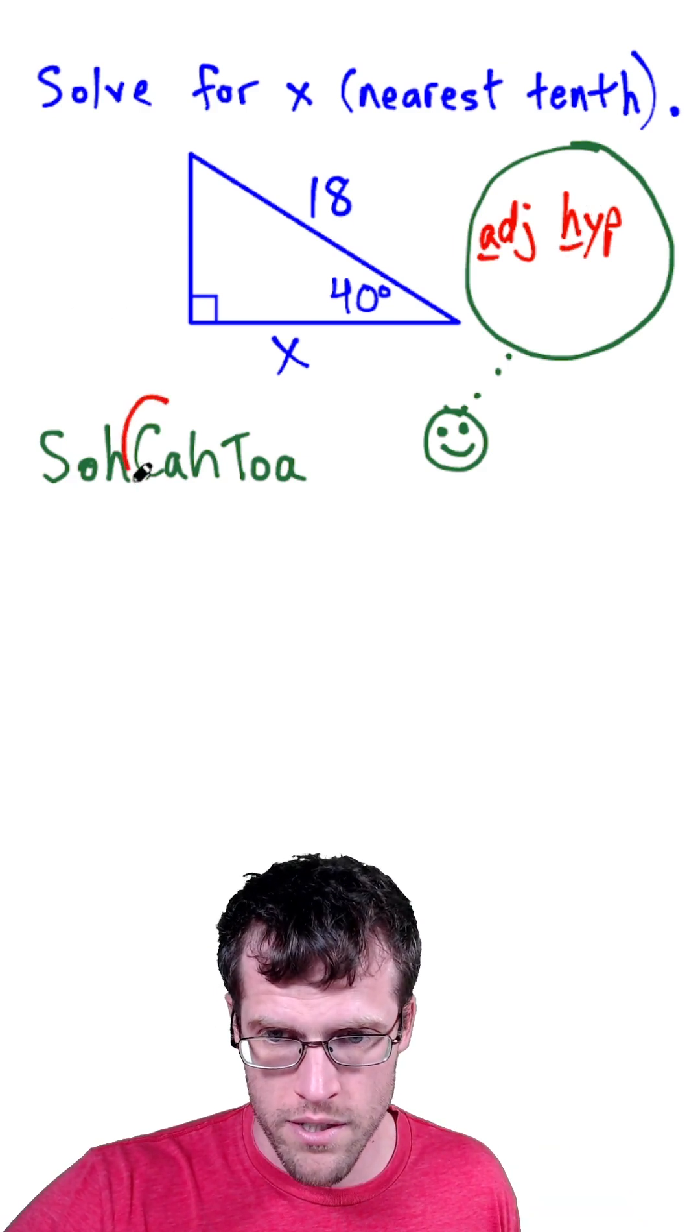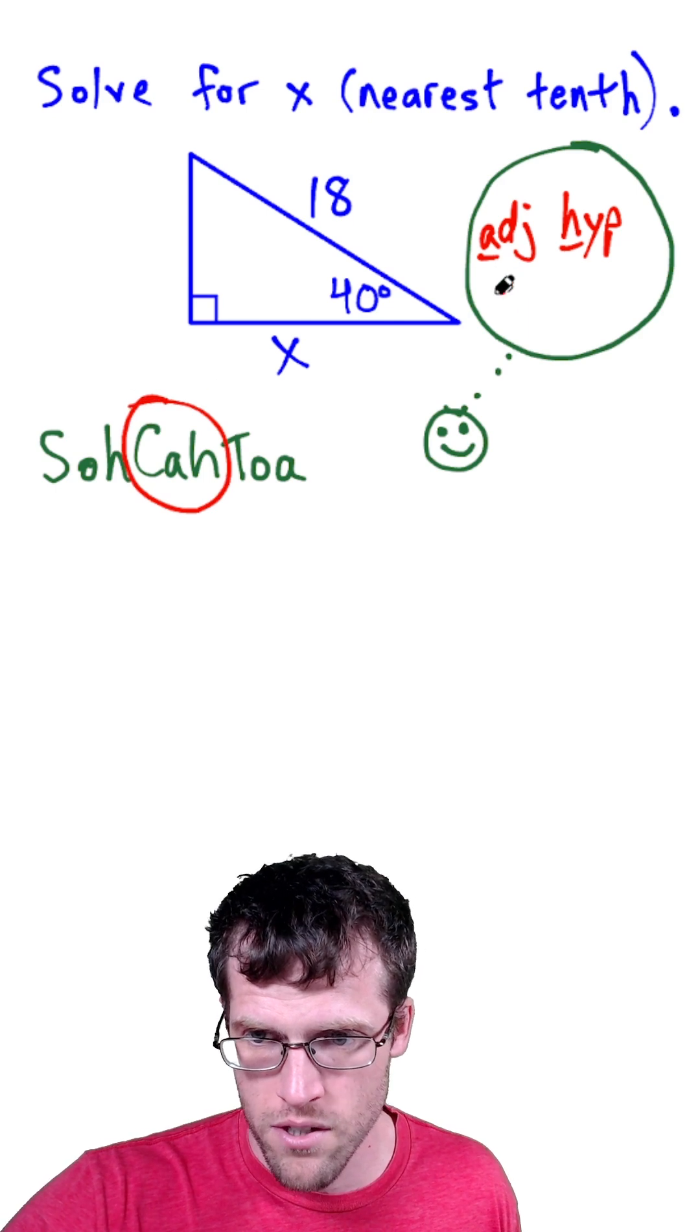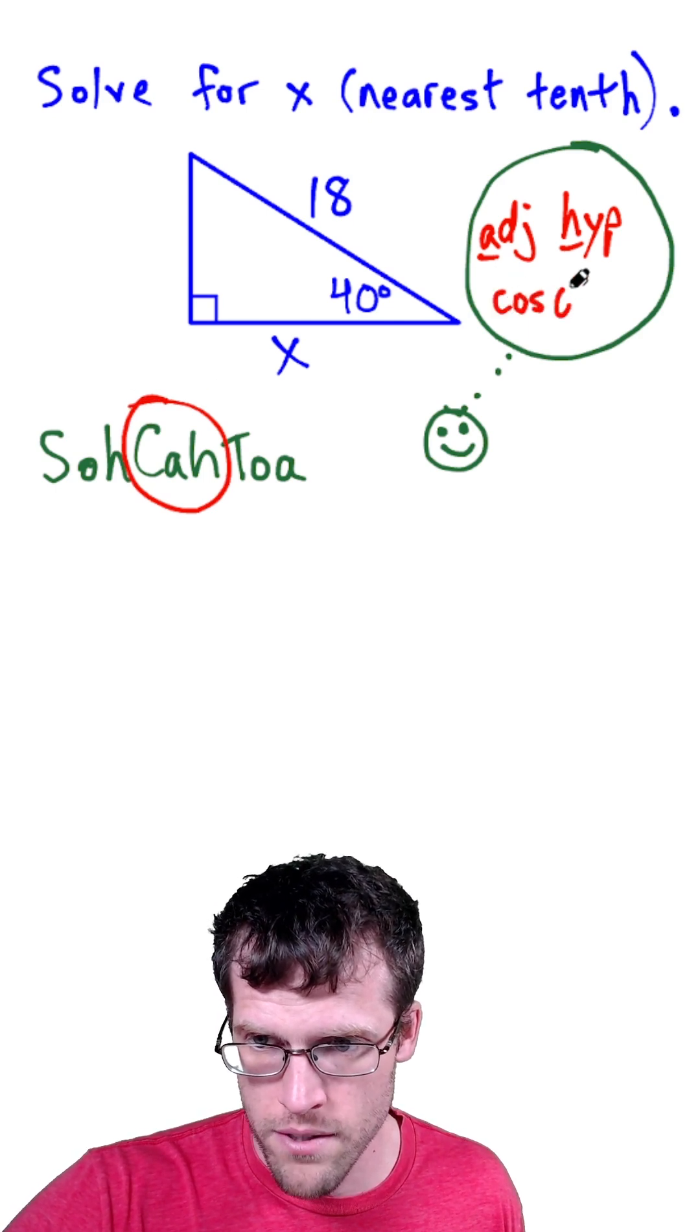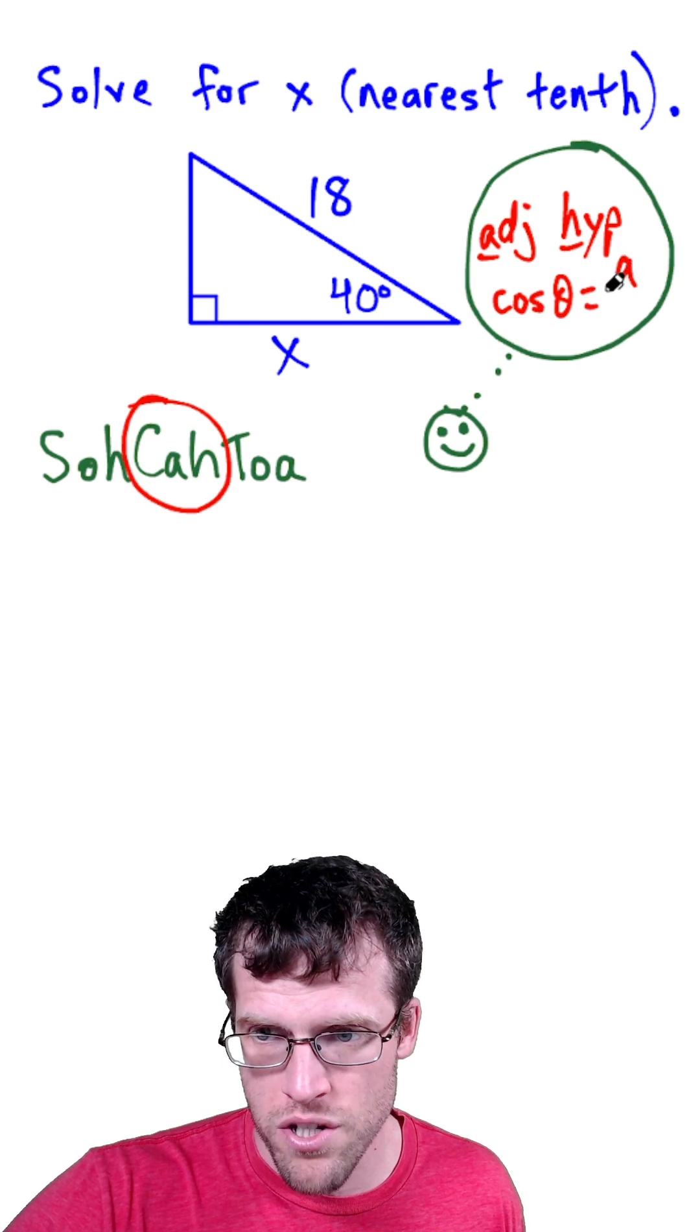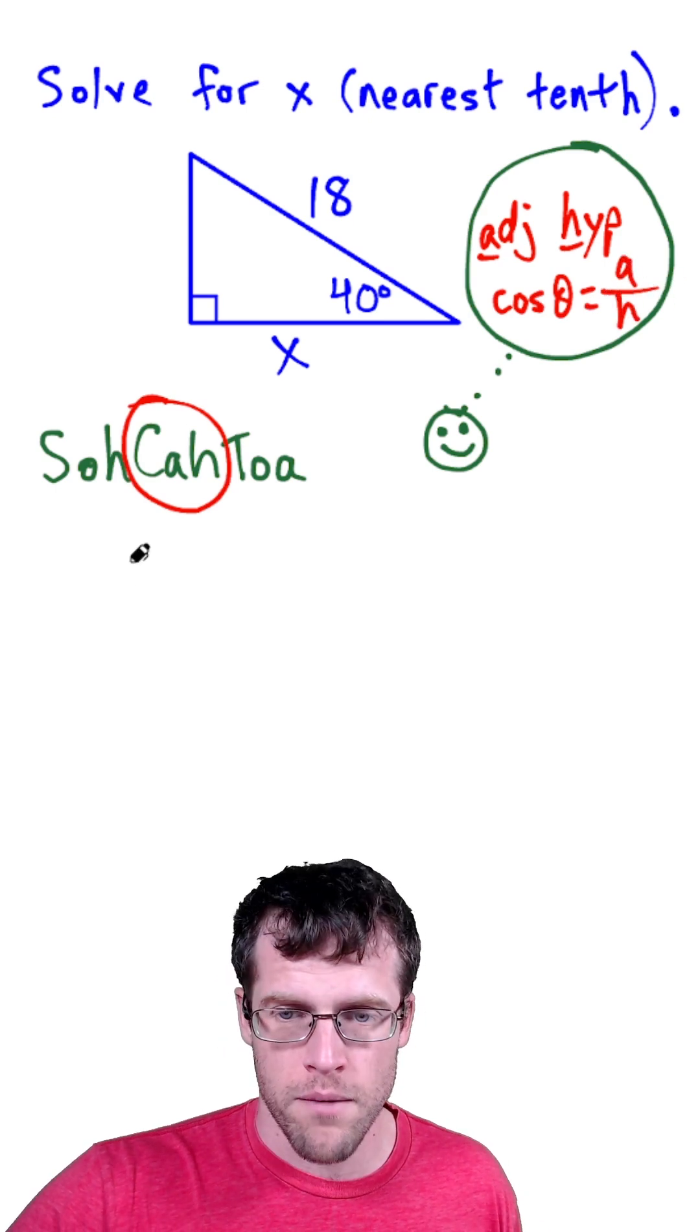We use SOH CAH TOA, and that tells us to go with cosine, because cosine of one of the positive acute angles inside of a right triangle is equal to the ratio of the adjacent side over the hypotenuse.